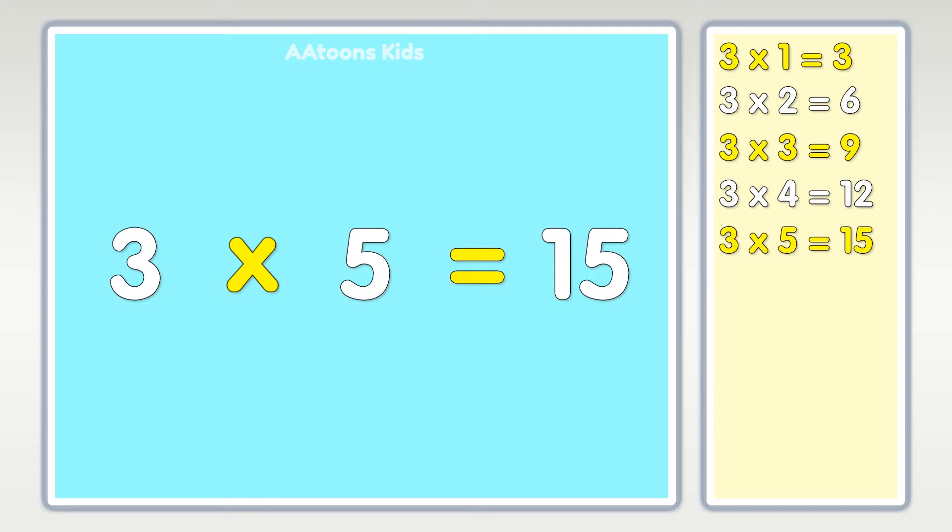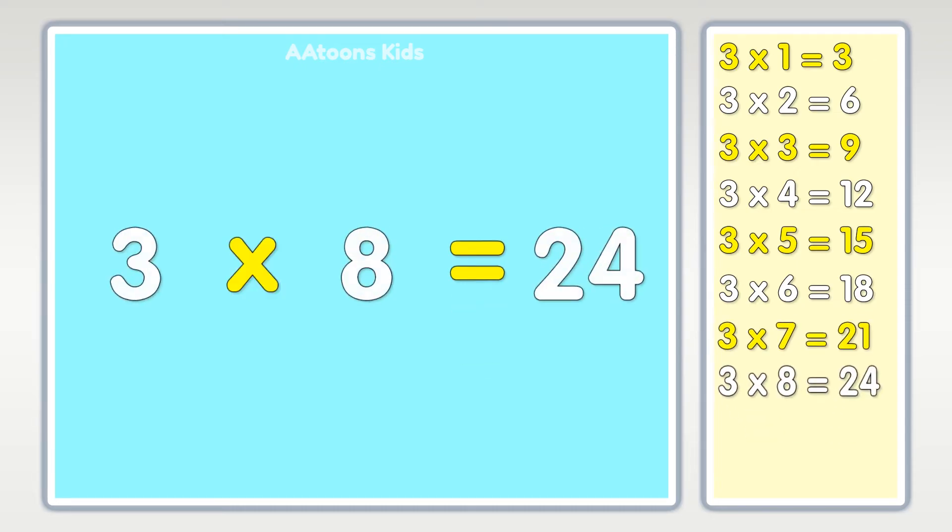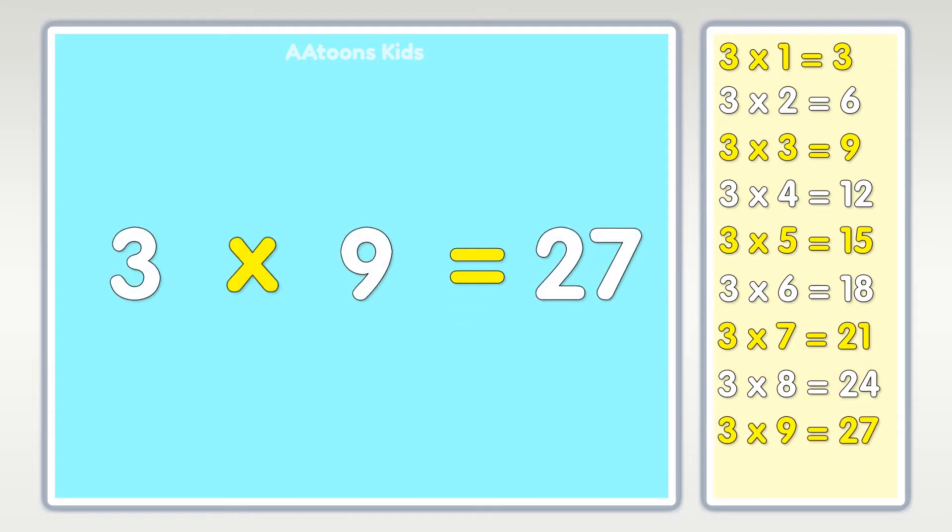Three times five is fifteen, three times six is eighteen, three times seven is twenty-one, three times eight is twenty-four, three times nine is twenty-seven, three times ten is thirty.